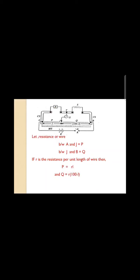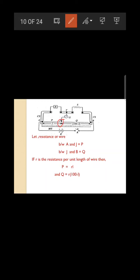When the galvanometer shows no deflection, say at position J, the length from A to J is taken as L, and from J to B is 100 − L. A meter scale is also attached to measure wire lengths. Resistance per unit length is R, so the resistance of portion P = RL and of portion Q = R(100 − L).